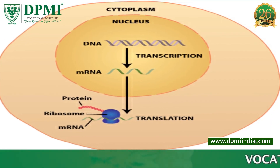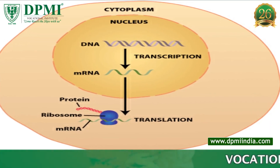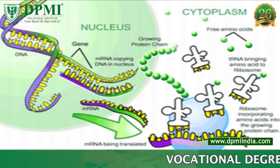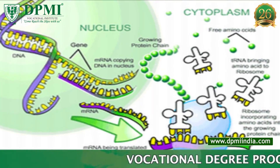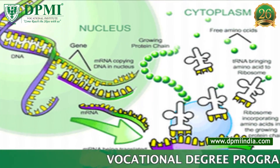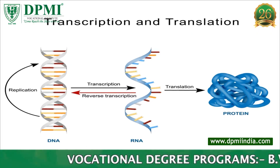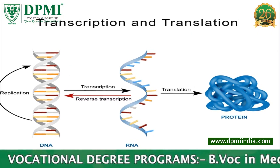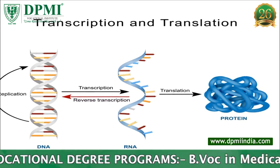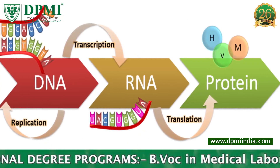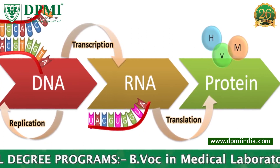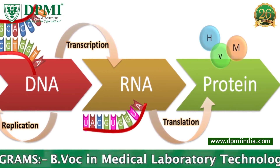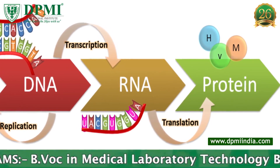Protein synthesis is the process of making proteins by cells. It has two stages, namely transcription and translation. These two processes are collectively called the central dogma of molecular biology, with DNA making RNA and RNA making protein.